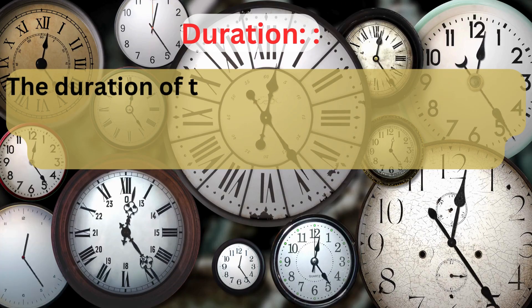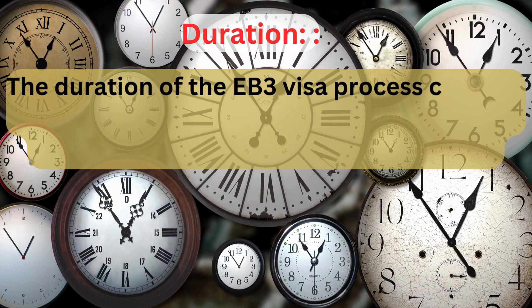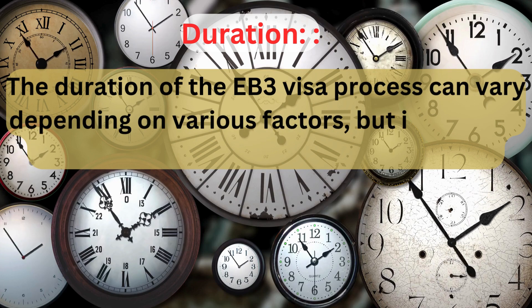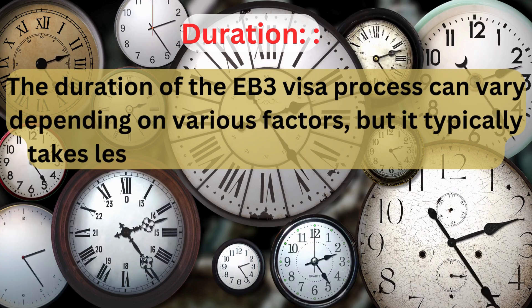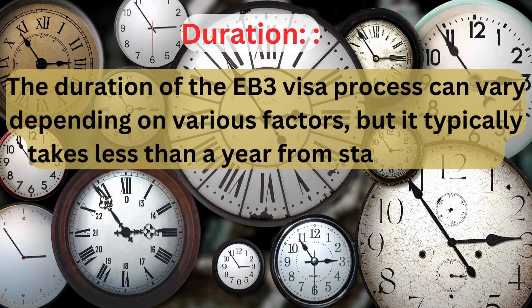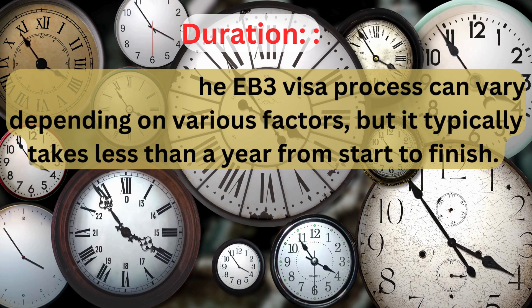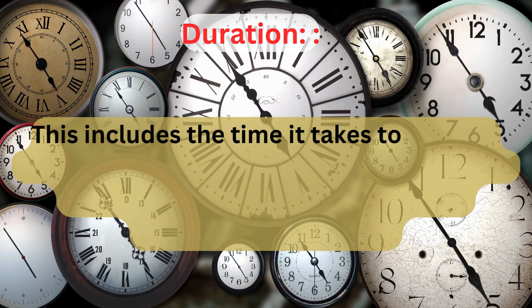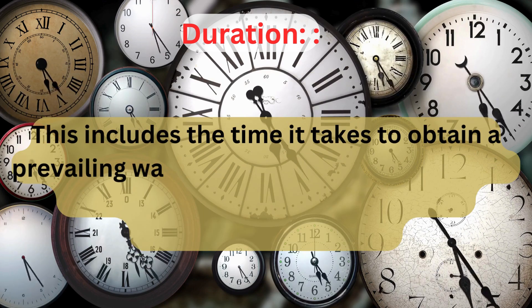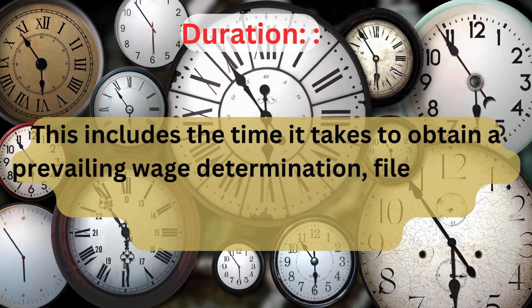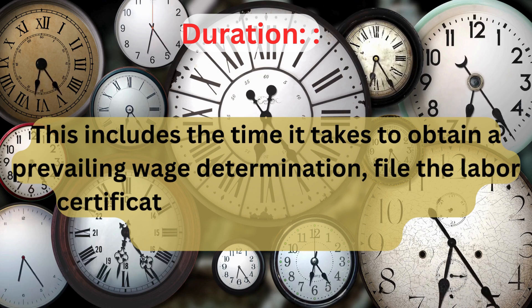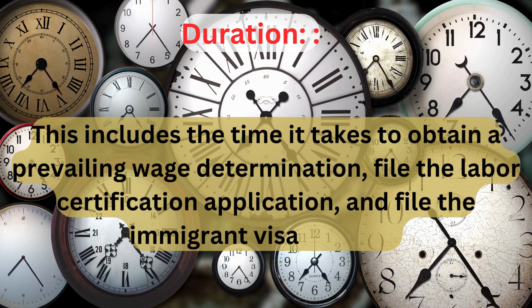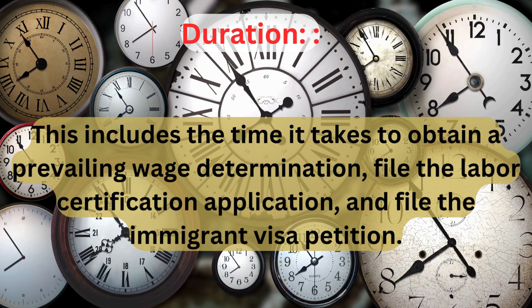The duration of the EB-3 visa process can vary depending on various factors, but it typically takes less than a year from start to finish. This includes the time it takes to obtain a prevailing wage determination, file the labor certification application, and file the immigrant visa petition.